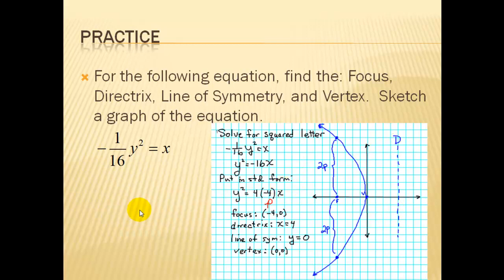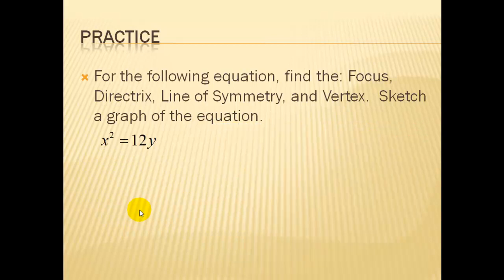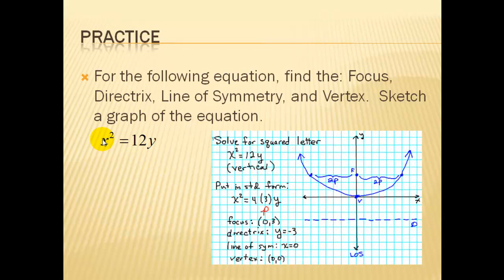Let's look at another example. In this example, our x is squared, so we know that means we are going to have a vertical parabola. This one is already in standard form. So we can split the 12 by dividing it by 4 into 4 times 3, so our p is 3. So our focus is going to be 3 units up from the vertex. And you can see here our directrix line of symmetry is our y-axis.